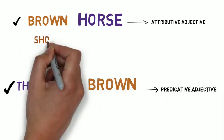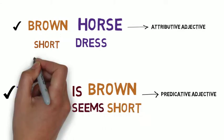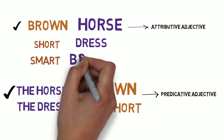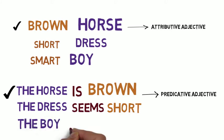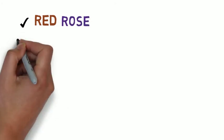Instead of short dress, say the dress seems short. Instead of smart boy, say the boy looks smart.